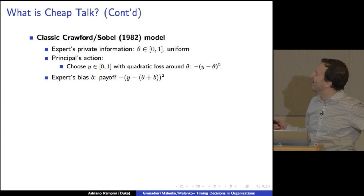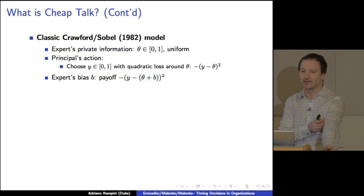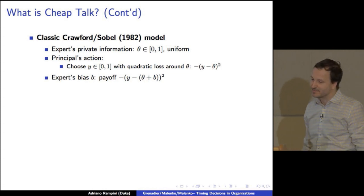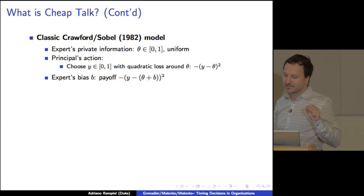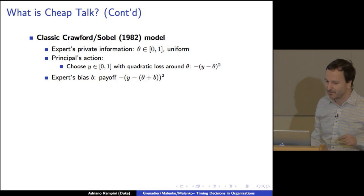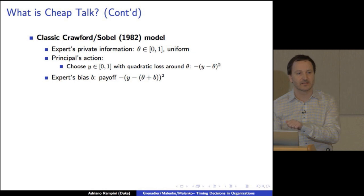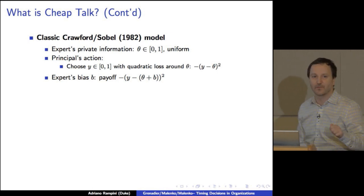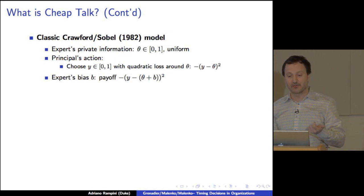Okay. So the standard model is the Crawford-Sobel model. So let me just review in a minute or two how this works. So the expert knows some theta, some parameter that lives between 0 and 1, and there's uniform distribution. The principal wants to choose some value between 0 and 1, some value y, and he doesn't like to deviate from theta. So he gets a quadratic loss from being off of theta. The expert has a bias b and also gets a quadratic loss, but around theta plus b.